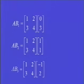A times the first column would be A, which is 1, 2, 3, 4, times the column 0, 3. A times B2 would be A, which is 1, 2, 3, 4, times the column 1, 1. And A times B3 would be 1, 2, 3, 4, times the column negative 1, 2.